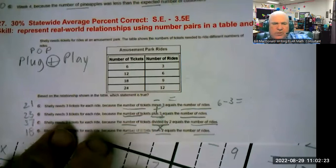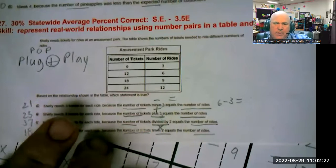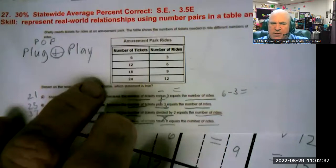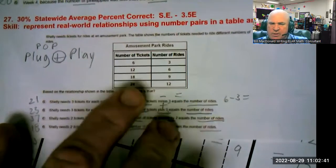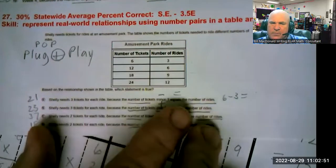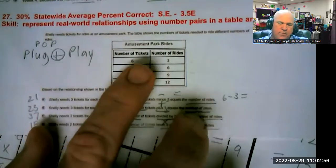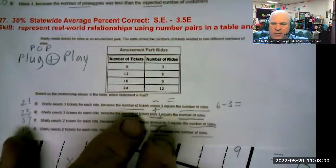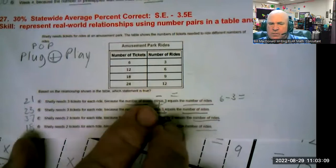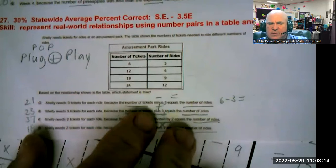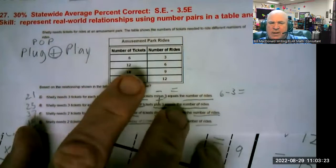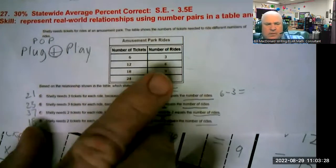I'm going to read them all pretty quickly. Shelley needs three tickets for each ride, three tickets for each ride, because the number of tickets, left column, minus three, operation, equals the number of rides. That would be plug, operation, play: six minus three. Letter B says that Shelley needs three tickets because the number of tickets, plug 12, plus three, operation, plus three equals the number of rides, six.